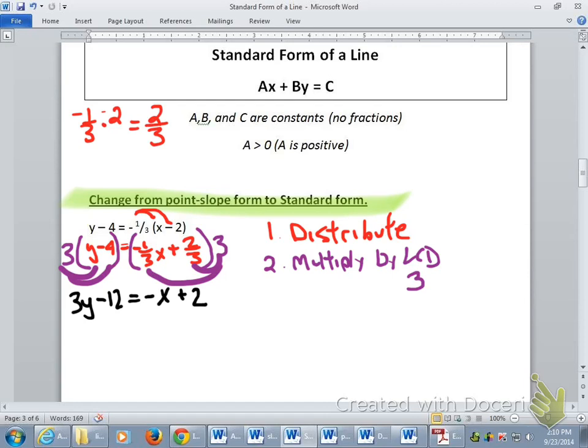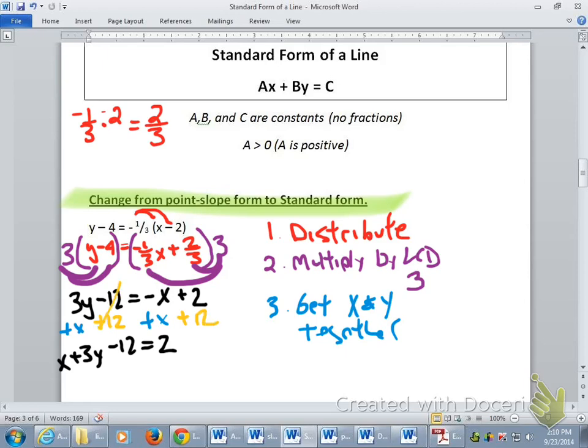Now I need to add that x to both sides. So I'm going to get the x and the y together. If I add x to both sides, that leaves me with x plus 3y minus 12 equals 2. And get the constants on the other side. Some people like to just put these two steps together at the same time. So I'm going to put the constants together - add 12 to both sides.